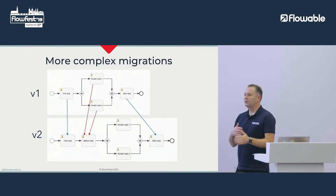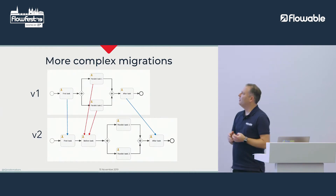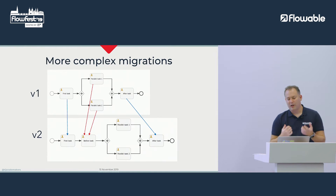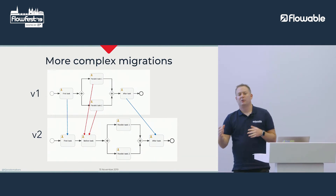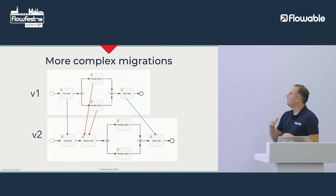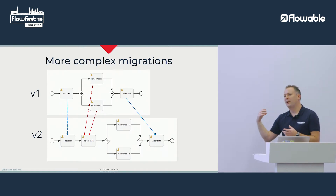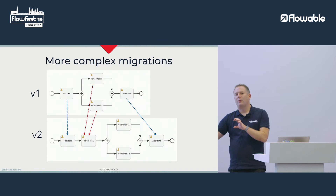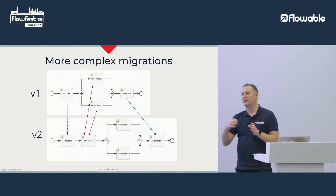In addition to basic process migrations, we can also do more complex ones. We are still mapping first task in v1 to v2 without explicit mapping, but if the current state is parallel task 1 and 2, we want to move to the before task in process definition v2 — that's already a bit more complex. We can also have a call activity with a subprocess instance running, and you can migrate from an element in that subprocess instance to a state in the parent process instance, or the other way around.